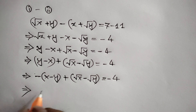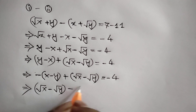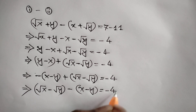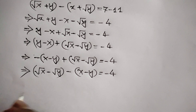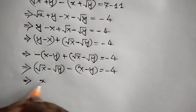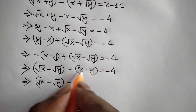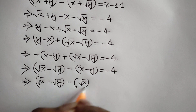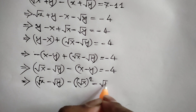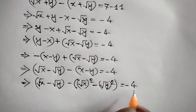Again rearranging the left side we can write: square root of x minus square root of y minus x minus y is equal to negative 4. Here x can be written as square root of x whole square, and similarly y can be written as square root of y whole square, is equal to negative 4.